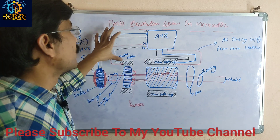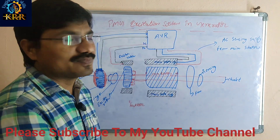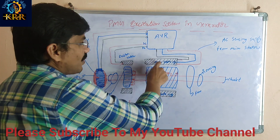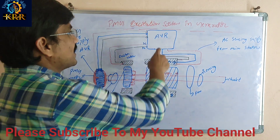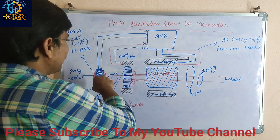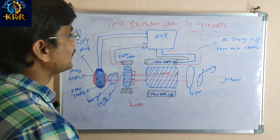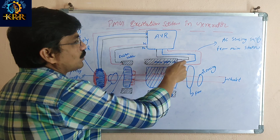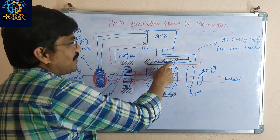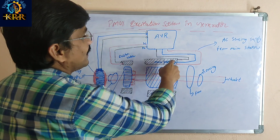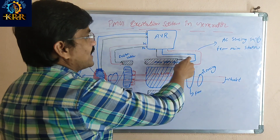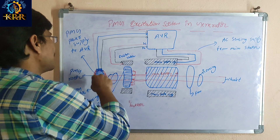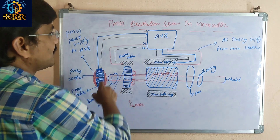That is the default of the self-excitation system, and that's why we use the PMG excitation system. In this PMG excitation system, the power supply is taken from the PMG generator, not from the main stator. The sensing — how much output voltage is coming from the generator — is taken from the main stator for sensing purposes only.